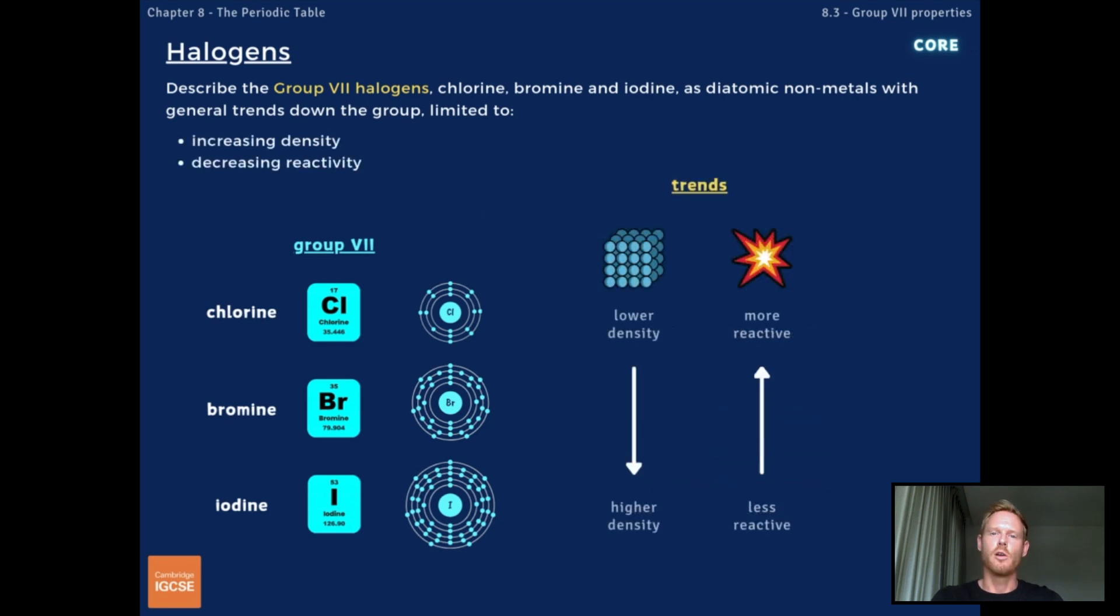General trends moving down Group 7 include an increase in density and a decrease in reactivity. Density increases because the atomic mass increases significantly faster than the atomic radius or size, meaning more mass is packed into a relatively similar volume.